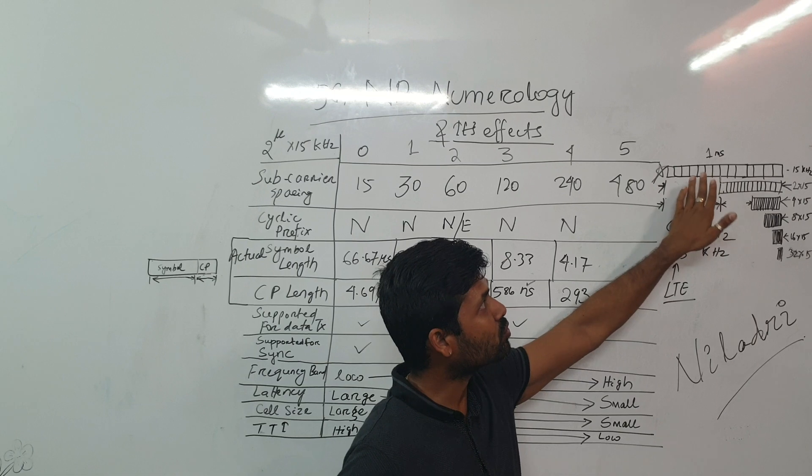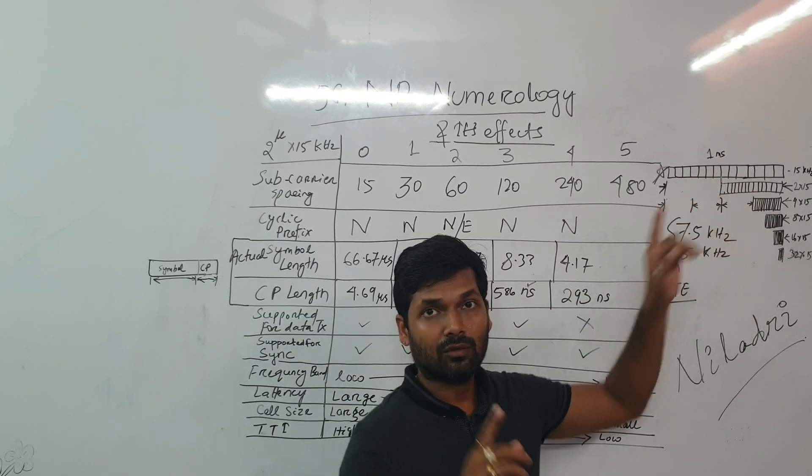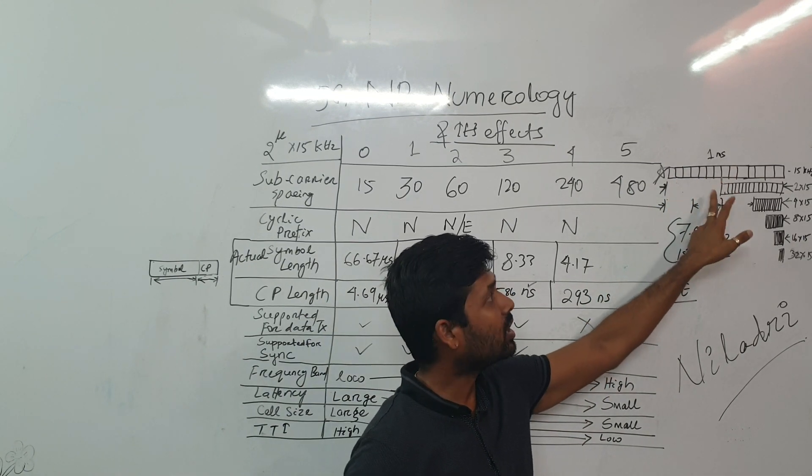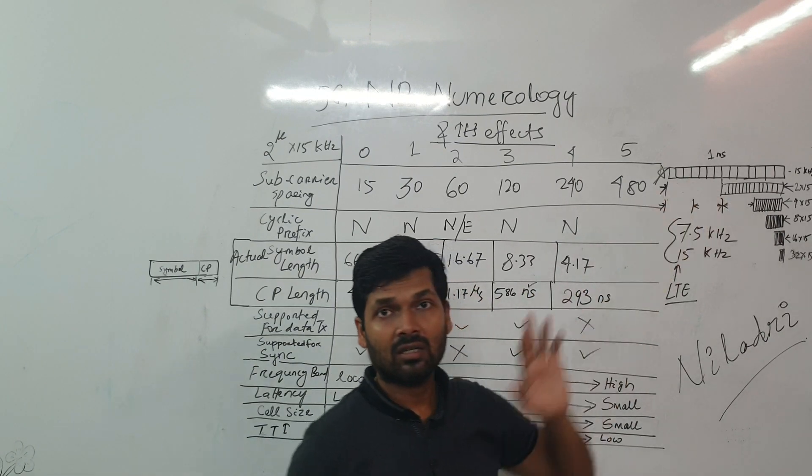In normal cyclic prefix in LTE we used to have 0.5, 0.5 millisecond. For one radio subframe is 1 millisecond. Within that in LTE we have 0.5 and 0.5. Each 0.5 is having 7 symbols.